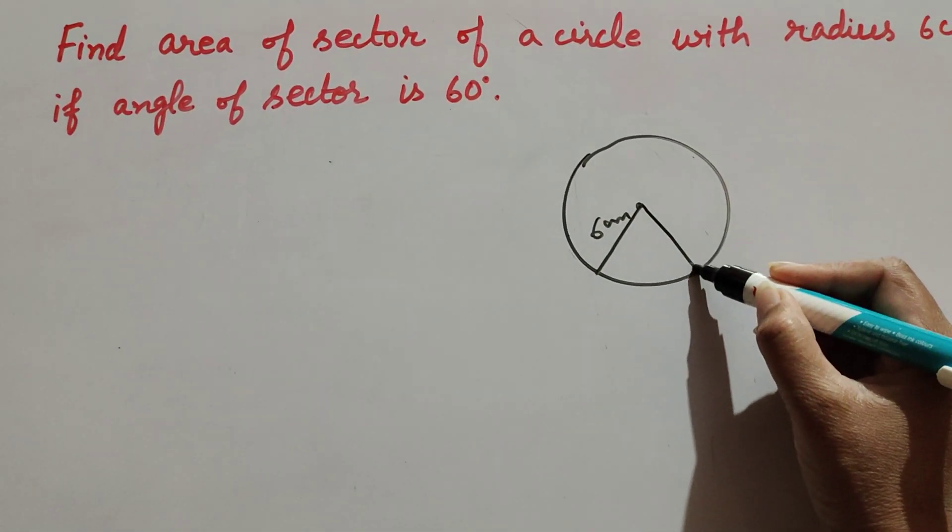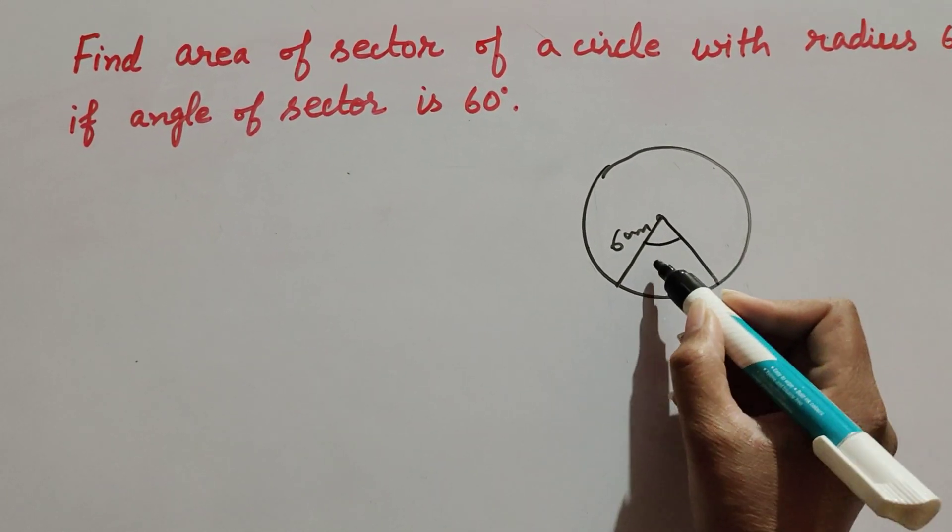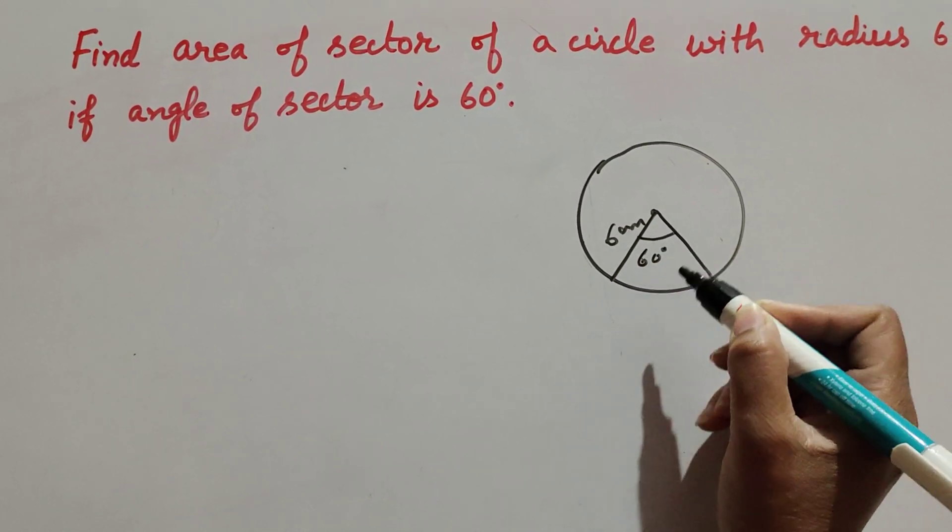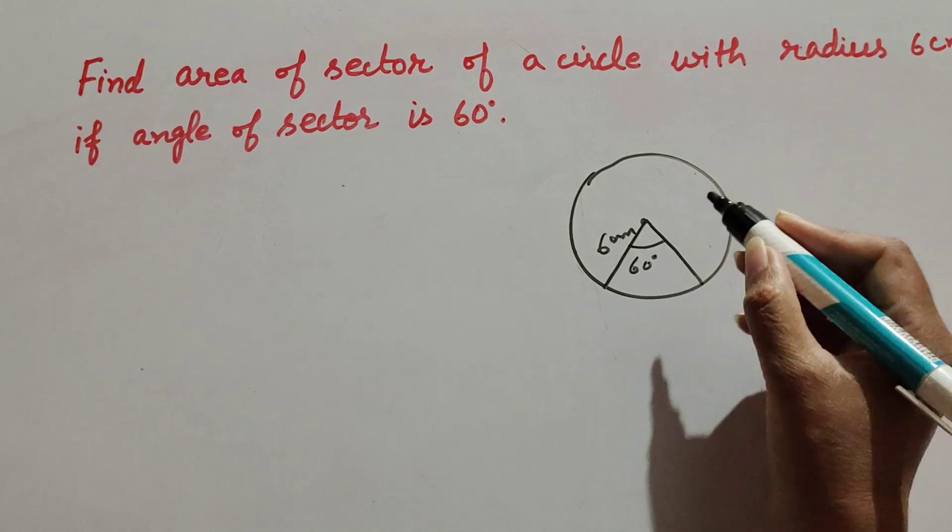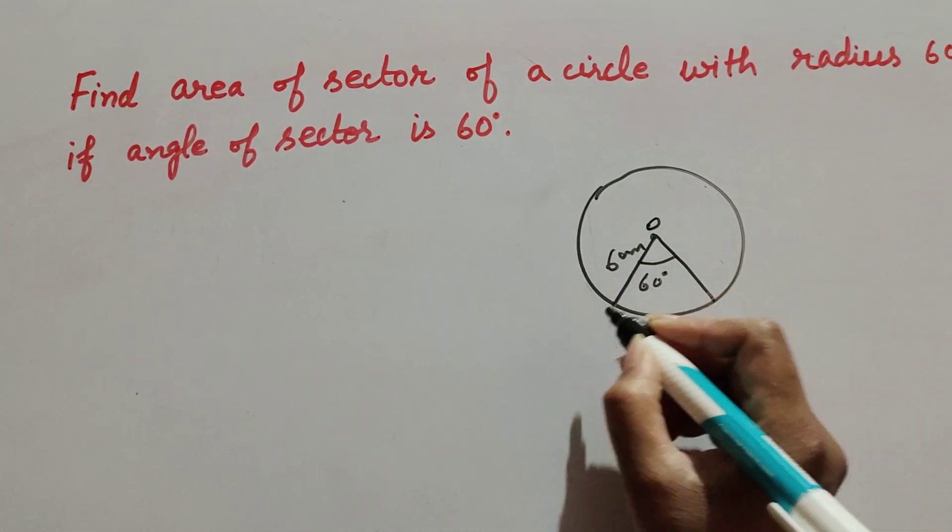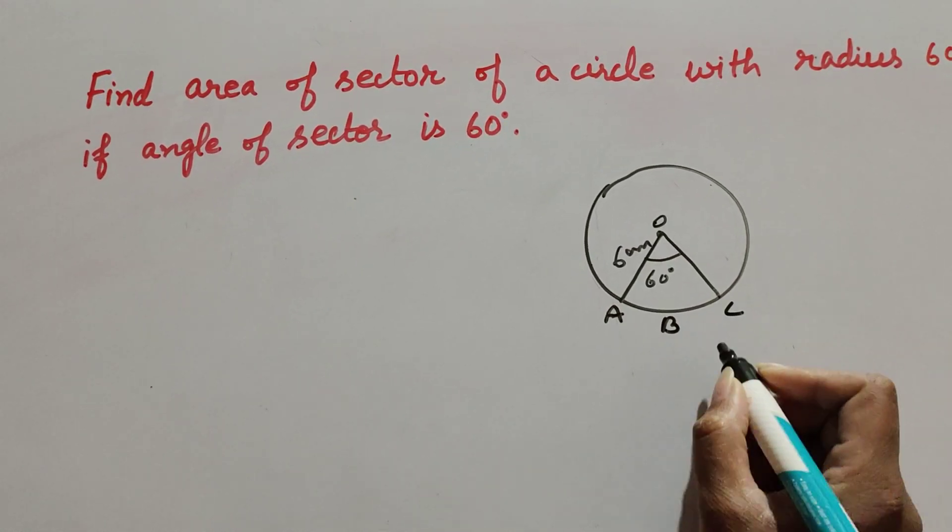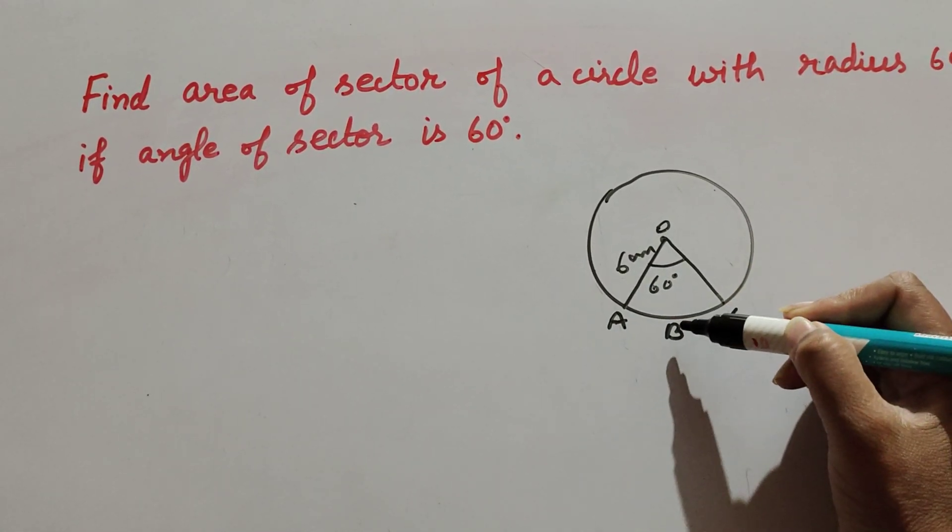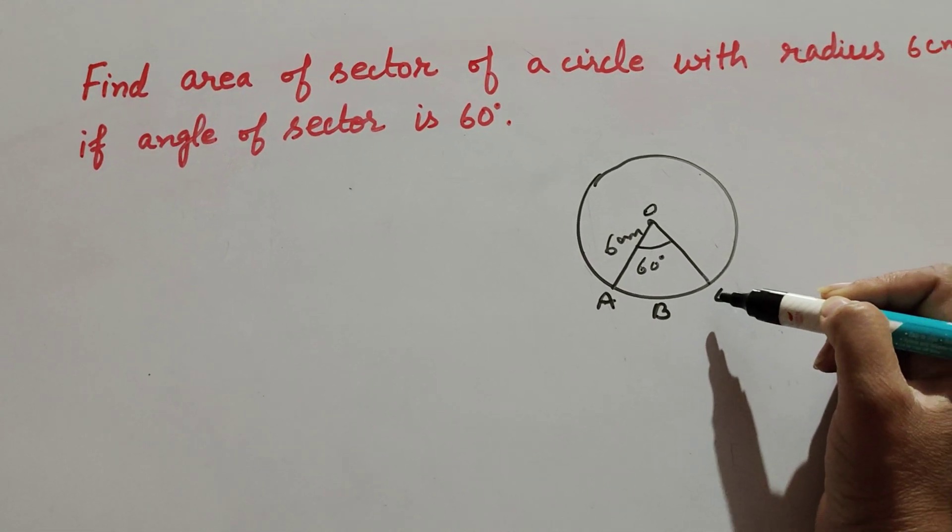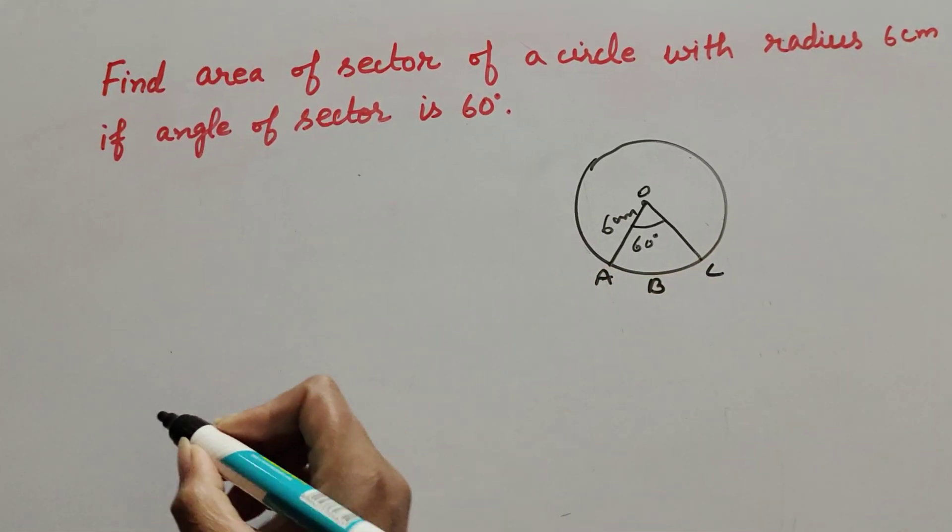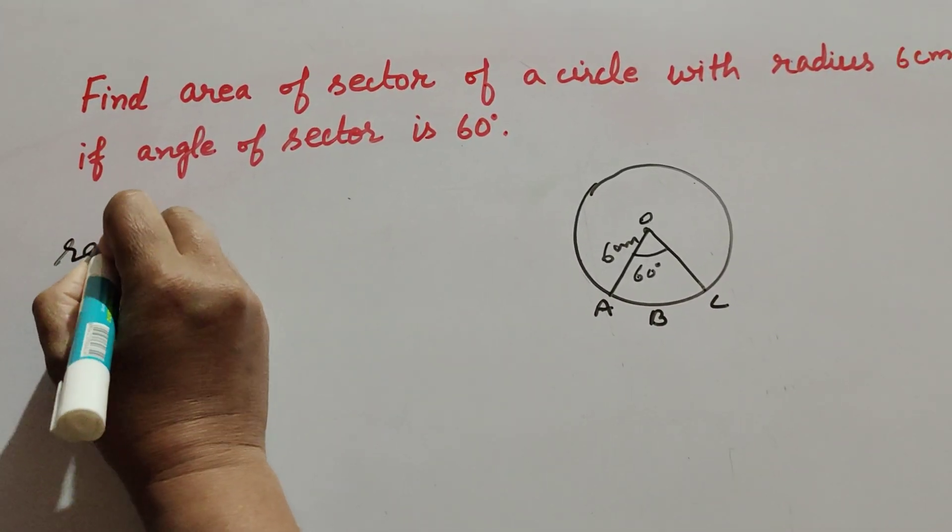Angle of sector is 60 degrees and we find area of this sector. We mark it as O A B C. We find the area of O A B C.